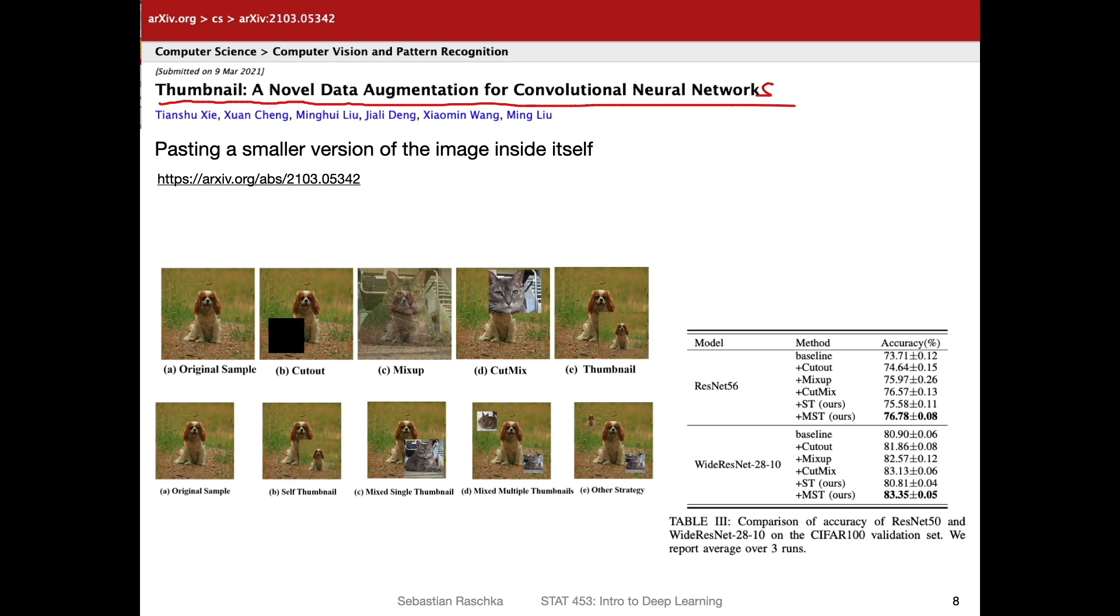So here, what is interesting is that something very simple, like generating a thumbnail might potentially improve the performance. So what they're doing is they're essentially creating a smaller version of the image, and then pasting it into the image itself. Interestingly, there's a lot of related work. There's something called cutout where people just cut out a region of the image, mixup where people overlay the image with another image, and then there's cutmix where they paste something from a different image here. And then this thumbnail approach that they used where they have the same image, make it small and then paste it back inside the image.